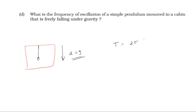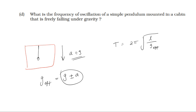The time period equals 2π root of L by g. For effective acceleration due to gravity: for a freely falling body, the effective acceleration due to gravity is g effective equals g plus or minus a. When a equals g, the effective acceleration due to gravity becomes zero.